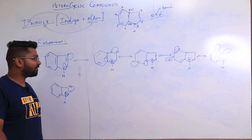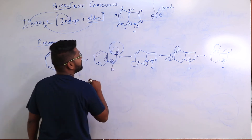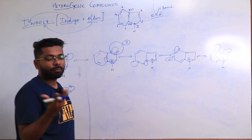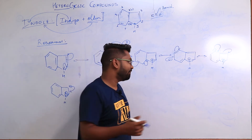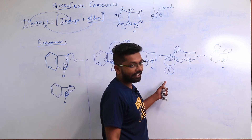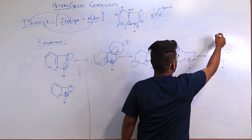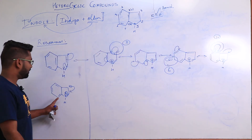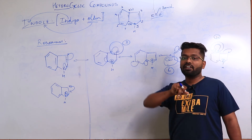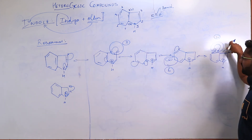The key takeaway from this resonance is: where are the electron-rich centers? The negative charges — and thus the electron-rich centers — are present at the 3rd position, the 6th position, and the 4th position. Position 7a is a bridgehead carbon, so reactions there are usually very less and can be ignored. So the two key points from the resonance are that negative charges are present at positions 3, 6, and 4.